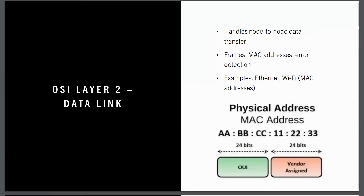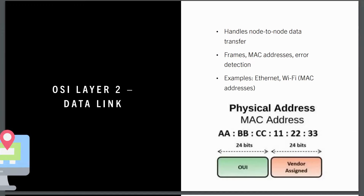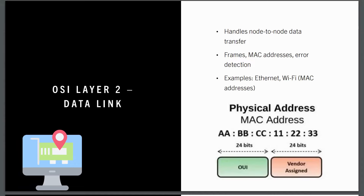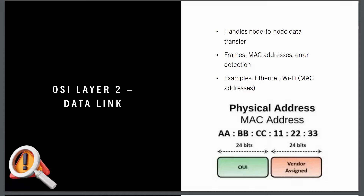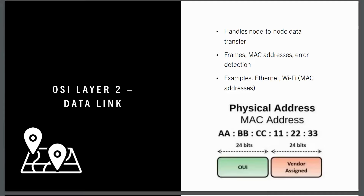OSI layer two: the data link. Layer two focuses on direct communication between two devices, called nodes, on the same network. It ensures that data gets from one device to another within a local network. Data at this layer is packaged into frames, which include the device's unique MAC address — like a device's ID on the network. This layer also handles error detection, making sure data arrives correctly. Common technologies at layer two include ethernet and Wi-Fi, both of which use MAC addresses to ensure data is delivered to the right place. Without it, devices couldn't identify each other.